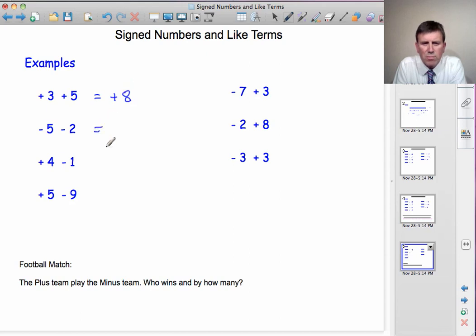What about this match? The minuses have scored all the goals. How many have they scored? 7 altogether. So the minuses win by 7.